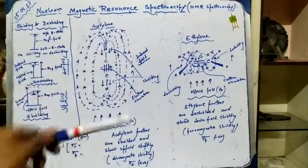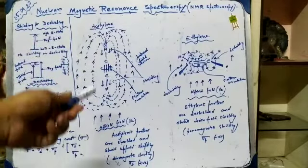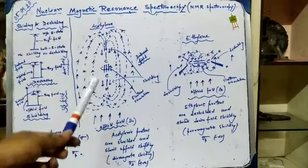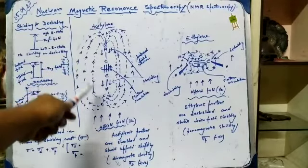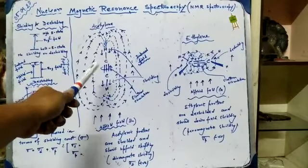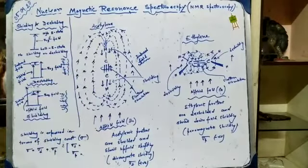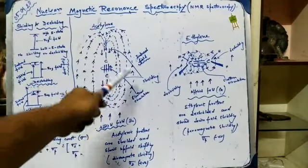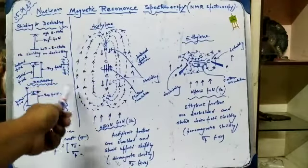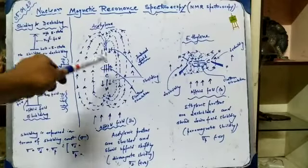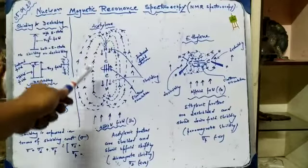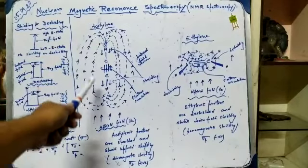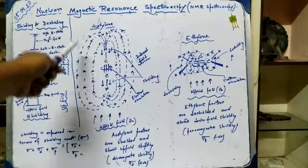This is the acetylene molecule showing the perpendicular orientation of the molecule. This is the circulation of the electron cloud. Since we have an electron cloud, there is definitely a magnetic field associated with the rotation of electrons. According to Lenz's law, if this is the direction of rotation of the electrons, the magnetic lines of force will lie perpendicular to the direction of rotation. So these are the magnetic lines of force, emerging from this side and reentering from that side.